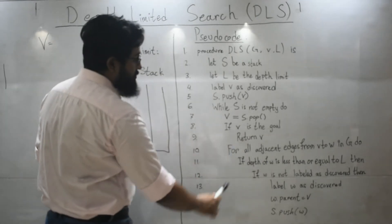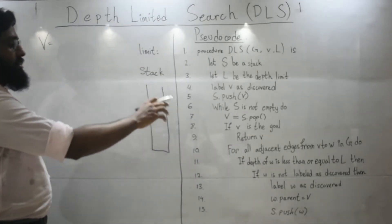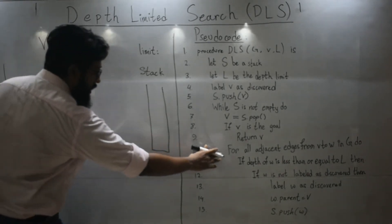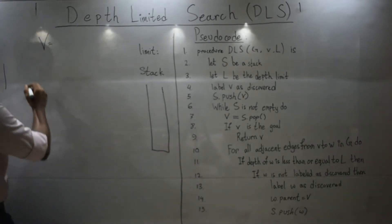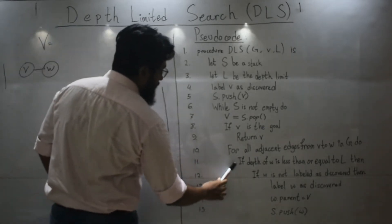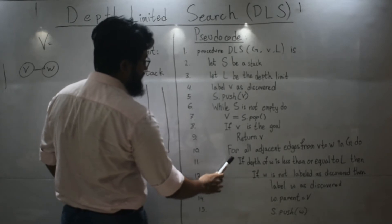Else, for all adjacent edges, from V to W, in G, do some tasks. So, what is V to W? You have a node V. You have a node W. So, any neighbor of V is W. So, over here, you will do all these tasks for the neighbors of V.